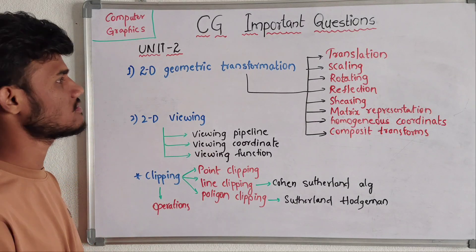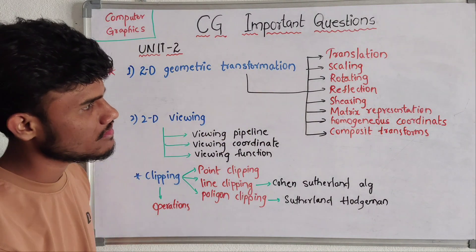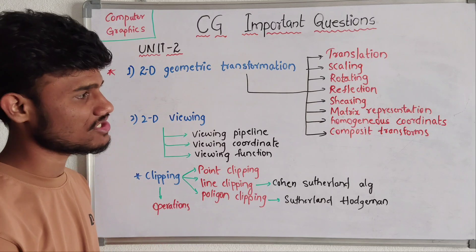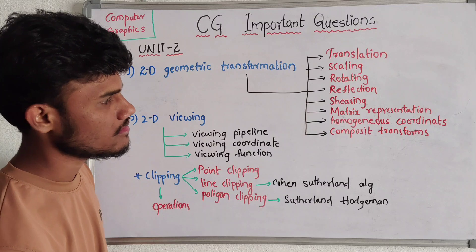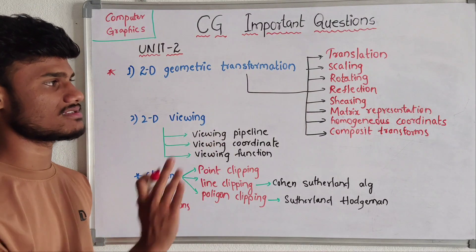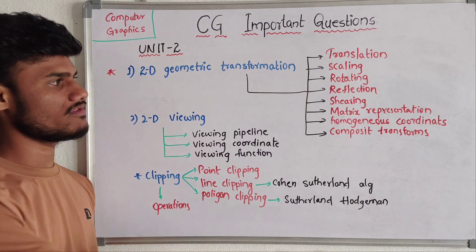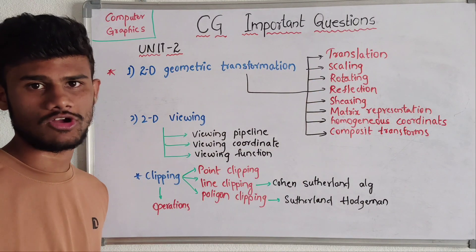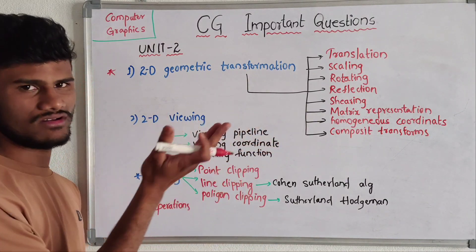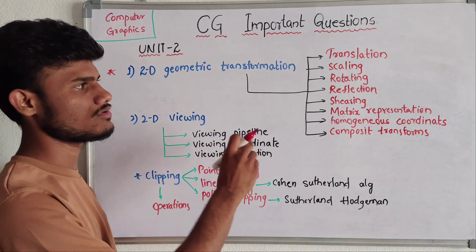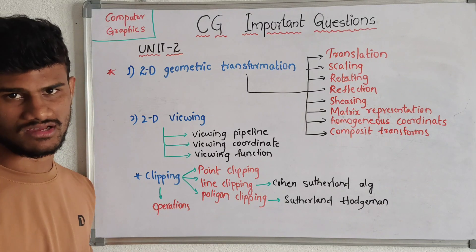In 2D geometric transformations, we have: translation, scaling, rotation, reflection, shearing, matrix representation, homogeneous coordinates, and composite transforms. These are the types of 2D geometric transformations. We need to explain each and every topic individually. With a maximum half page per topic, you can score 5 marks minimum from this unit.